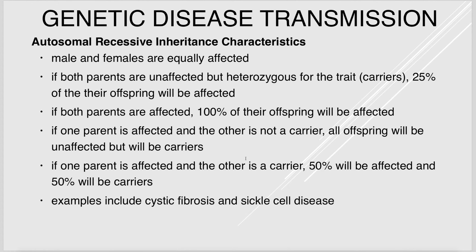With autosomal recessive inheritance, males and females are equally affected and the disease tends to skip generations. You must inherit two bad copies to have the disease. If both parents are unaffected but heterozygous carriers, 25% of offspring will be affected. If both parents are affected, all offspring will be affected. Examples include cystic fibrosis and sickle cell disease.